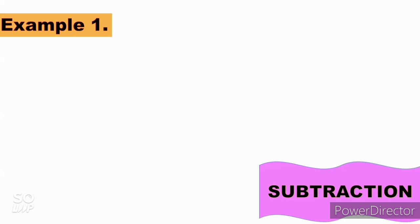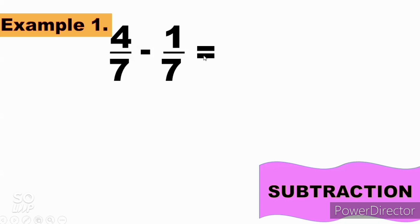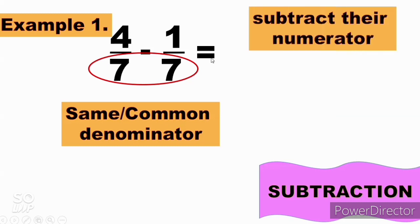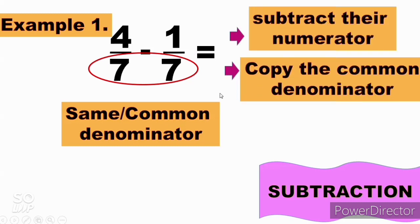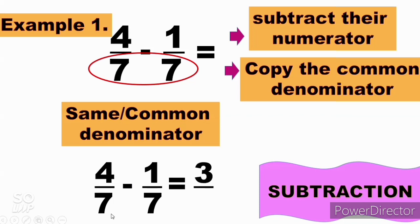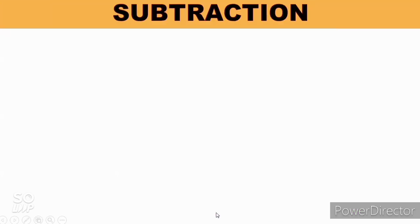Now let's proceed to how to subtract fractions. Example number 1: 4 over 7 minus 1 over 7. Notice the denominator is the same — both are 7. When the denominators are the same, the step is to subtract the numerators and copy the common denominator. 4 minus 1 is 3, and we copy 7. So the answer is 3 over 7. That is how to subtract fractions with a common denominator.